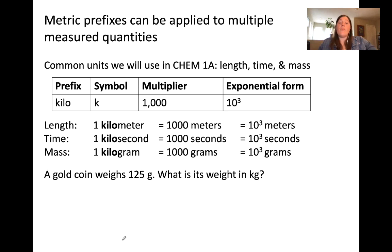If a gold coin weighs 125 grams, what is its weight in kilograms? Using the example of the domino, we have numerators and denominators for each step in our conversion. Here, the given information goes first, which is 125 grams. You'll notice there's nothing in the denominator because the unit gram is by itself.